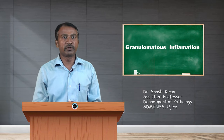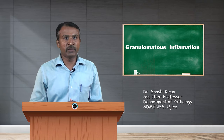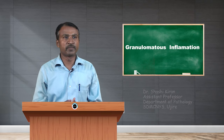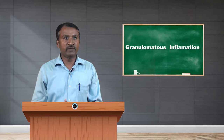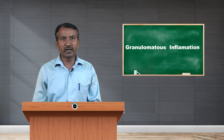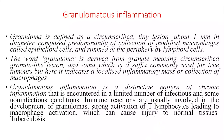Hello students, welcome to the session. Today we talk about granulomatous inflammation. Granuloma is defined as a circumscribed tiny lesion about one millimeter in diameter, composed predominantly of collections of modified macrophages called epithelioid cells, and rimmed at the periphery by lymphoid cells. The word granuloma is derived from 'granule' meaning circumscribed granule-like lesion, and 'oma' which is